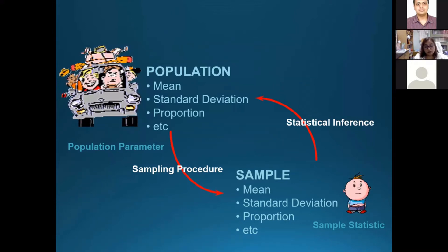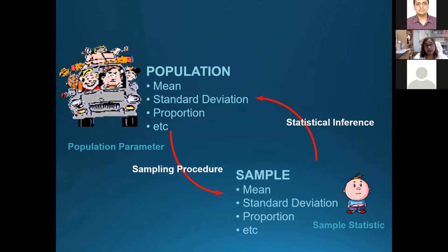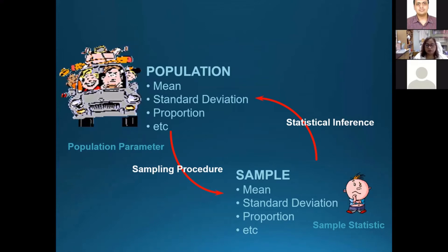Sampling involves two key aspects: sample size estimation and the sampling technique. Your sampling technique must be accurate so that you get a representative sample, and your sample size should be adequate so that you can have meaningful results which can be generalized to the entire population.